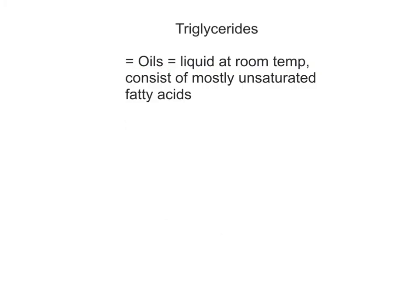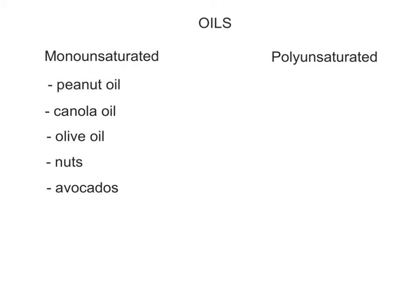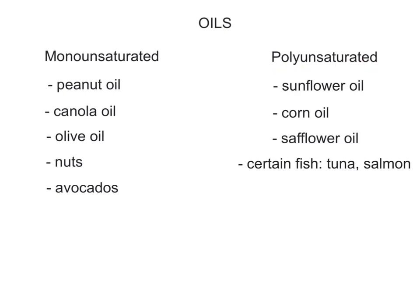Oils are triglycerides that are liquid at room temperature and consist mostly of unsaturated fatty acids. The presence of double bonds in the unsaturated fatty acid structure creates kinks in the chain that prevent them from packing closely together to form solids. Oils can be either monounsaturated or polyunsaturated. Monounsaturated oils include peanut oil, canola oil, olive oil, nuts, and avocados. Polyunsaturated oils include sunflower oil, corn oil, safflower oil, and fishes rich in fats such as tuna and salmon. Both monounsaturated and polyunsaturated oils are considered to be heart healthy and can help reduce the risk of heart disease.